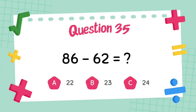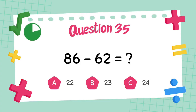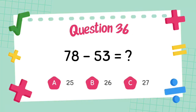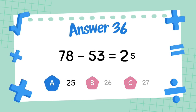What is 86 minus 62? The answer is 24. What is 78 minus 53? The answer is 23.